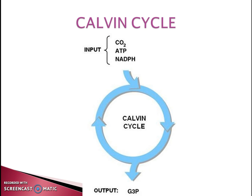The main inputs for the Calvin cycle are carbon dioxide, ATP, and NADPH, and the final output is triose phosphate. Carbon enters the Calvin cycle as carbon dioxide and leaves as sugar. ATP is the energy source, and NADPH acts as a reducing agent, providing high-energy electrons to form sugars.